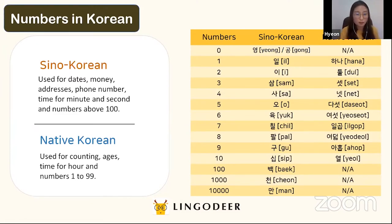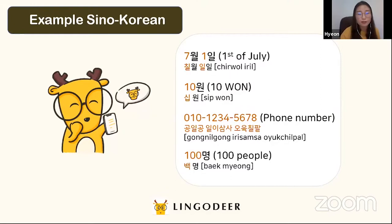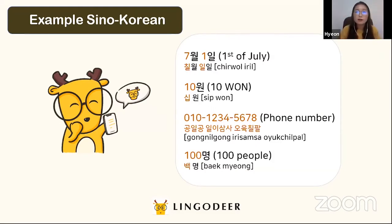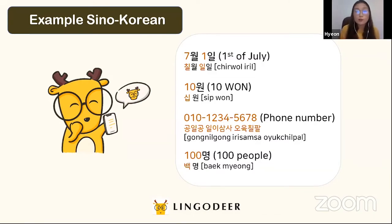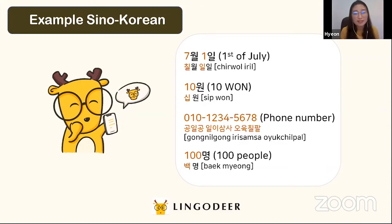Let's see some examples of Sino-Korean numbers. The first one is 7월 1일, which means July 1st. Next, we have a phone number: 010-1234-5678. Since phone numbers use Sino-Korean numbers, you read it as 영일공, 일이삼사, 오육칠팔.